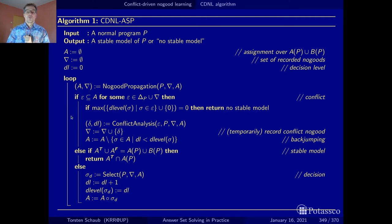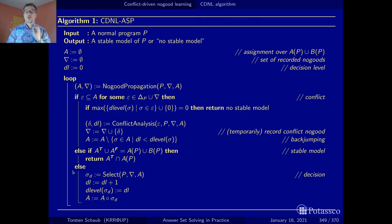If we found a no-good that is in the assignment, we have a conflict. If we have no conflict but obtained a total assignment, we have received a solution and return it to the user. Last but not least, if we have no conflict but still have unassigned variables, we make a choice and continue with the loop.